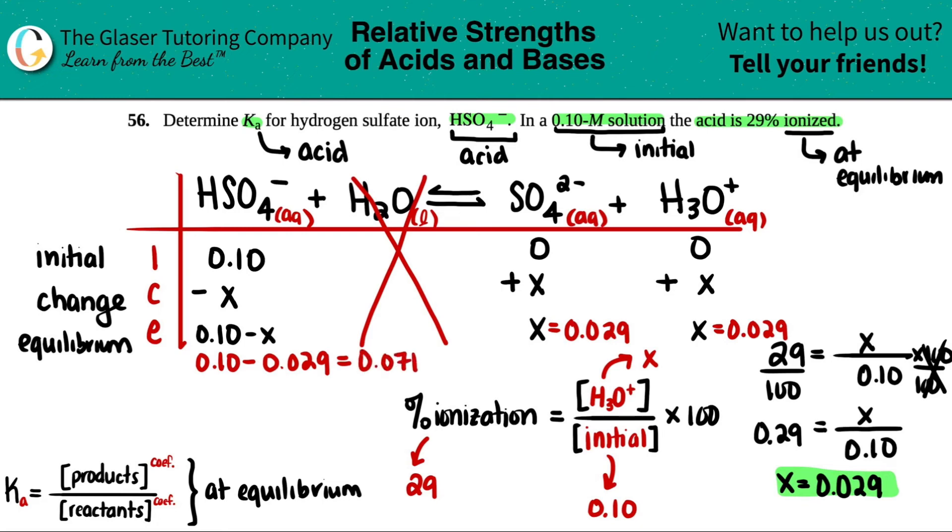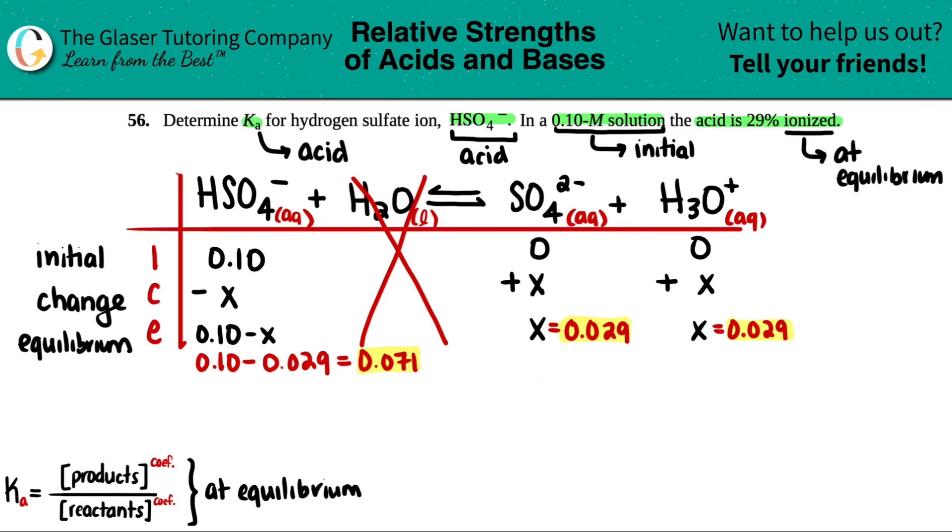Let's highlight these. Here's my new HSO4 minus concentration and these two are my SO4 2- concentrations, 0.029. Now I'm going to get rid of the percent ionization because we're still trying to solve for that Ka.